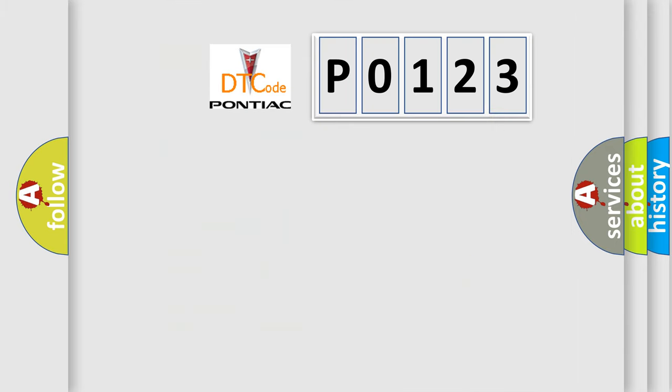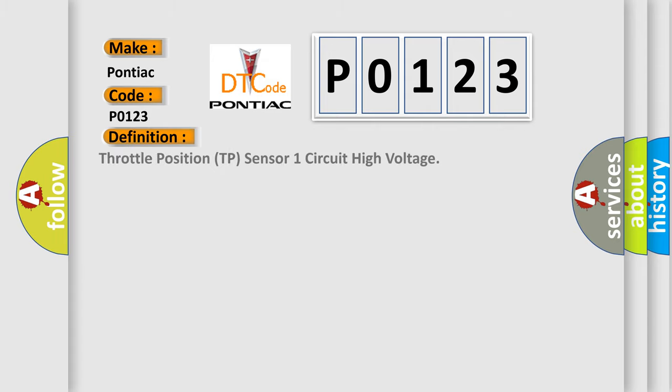So, what does the diagnostic trouble code P0123 interpret specifically? Pontiac car manufacturer. The basic definition is Throttle Position TP sensor 1 circuit high voltage. And now this is a short description of this DTC code.